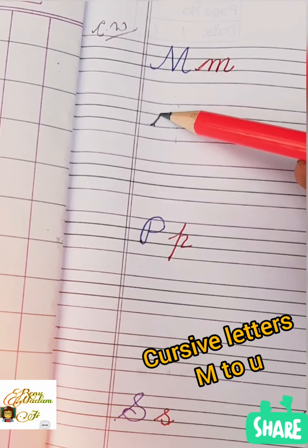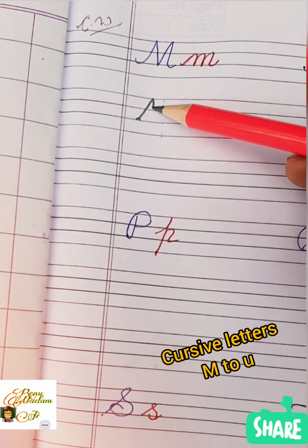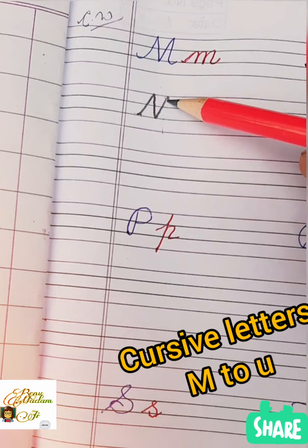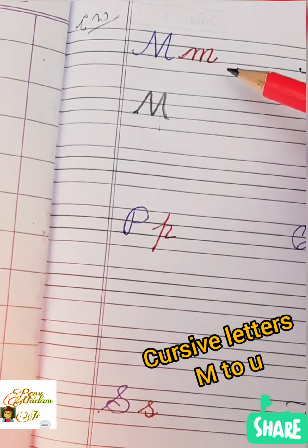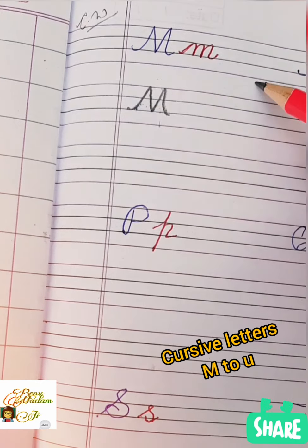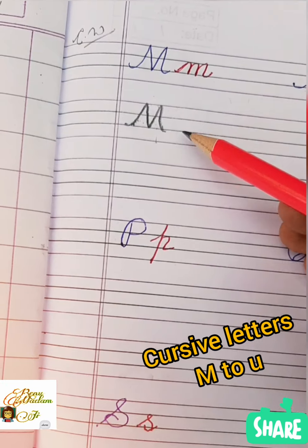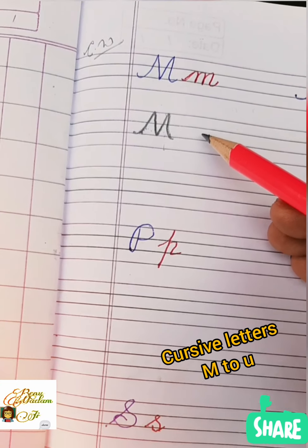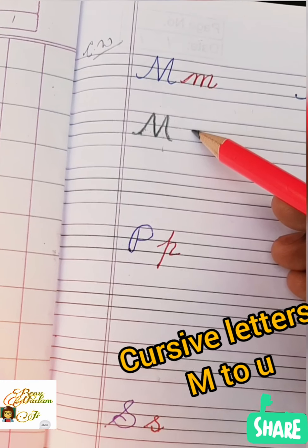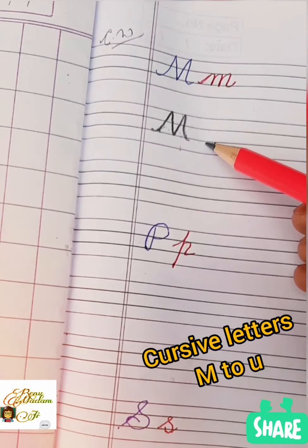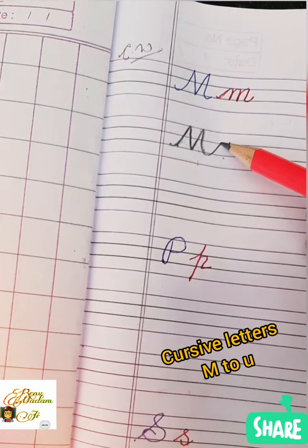This is our capital cursive M. And how to write small M? We will start small and between what is this? Middle to bottom line, right? Watch and write carefully.